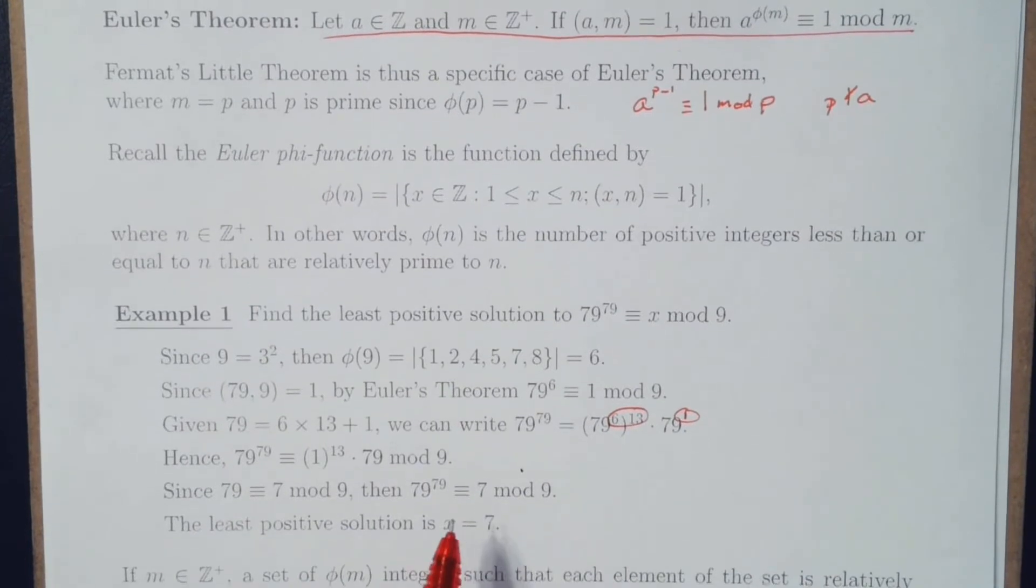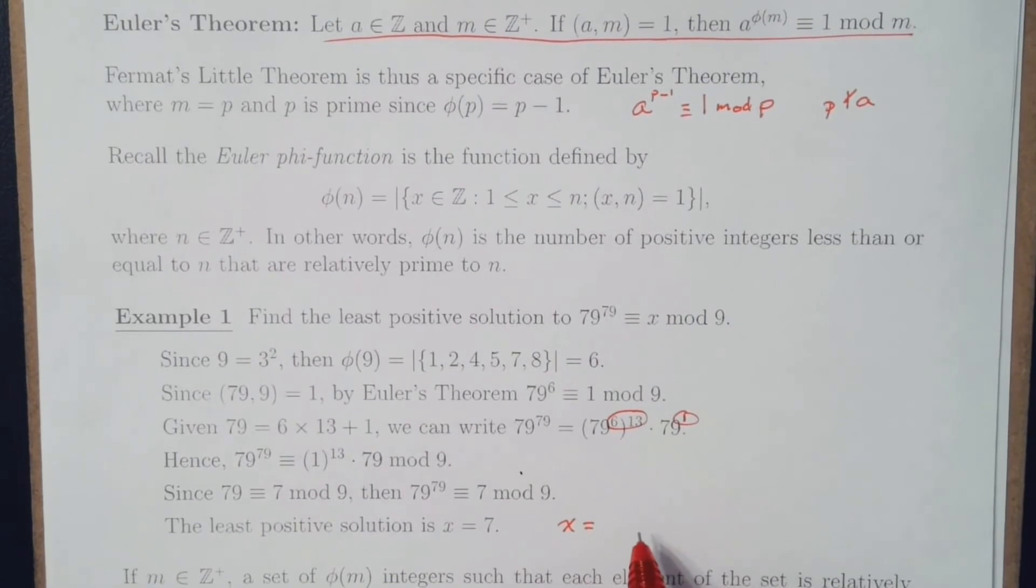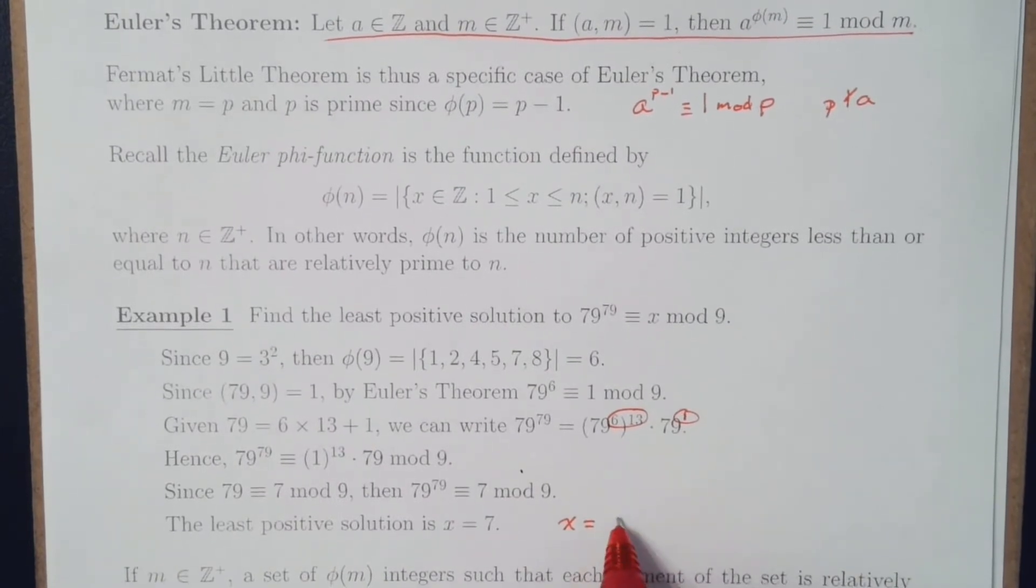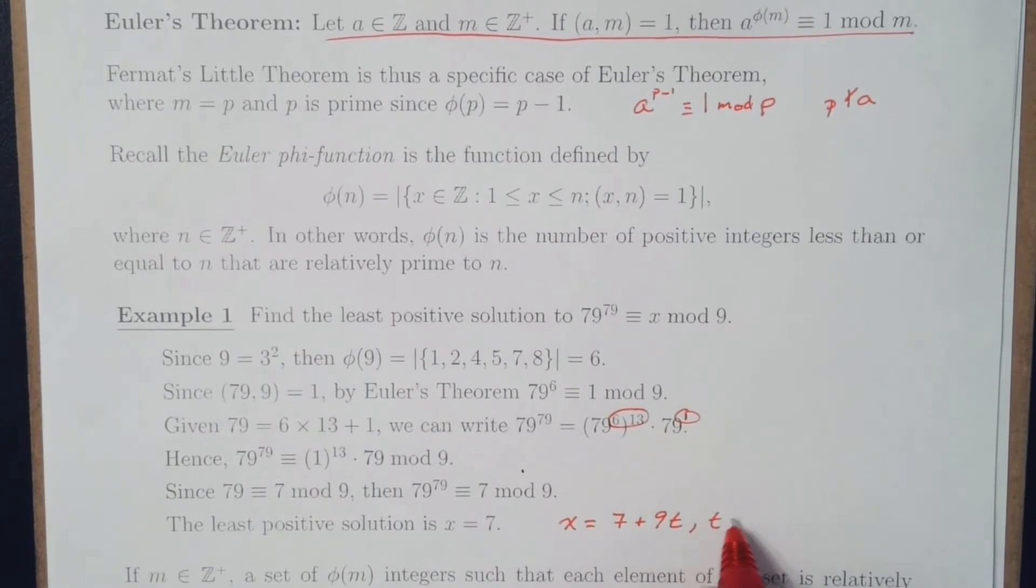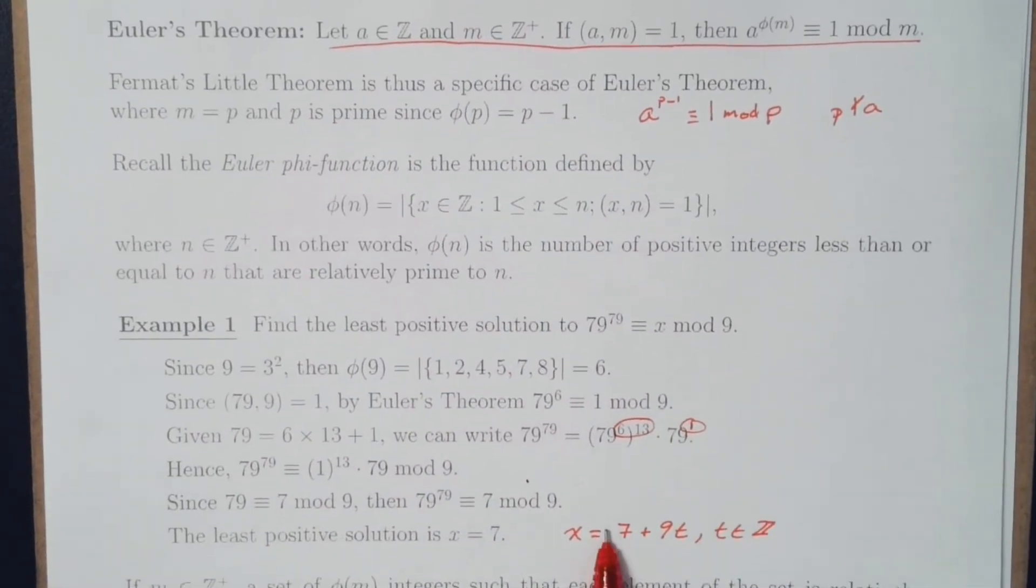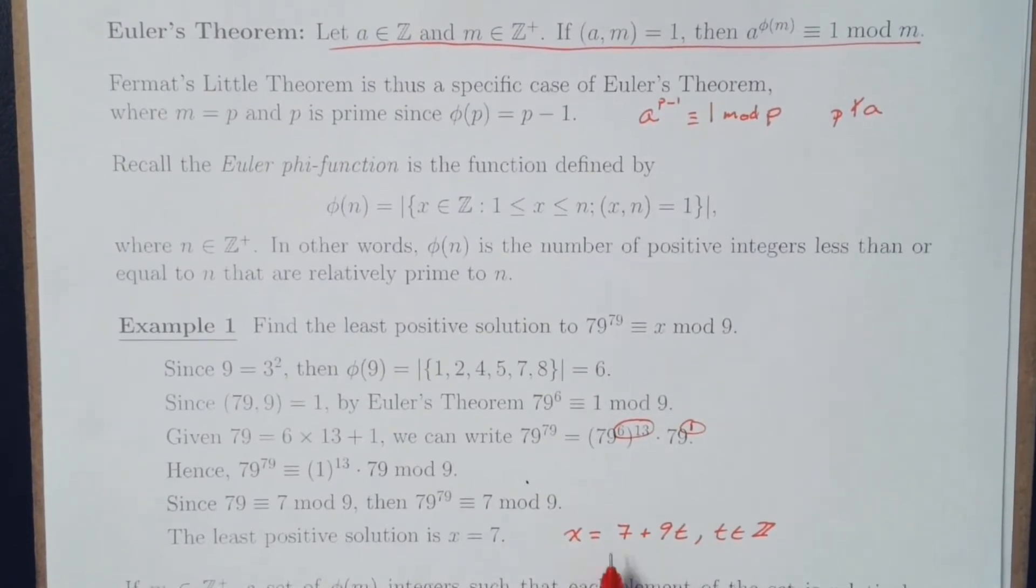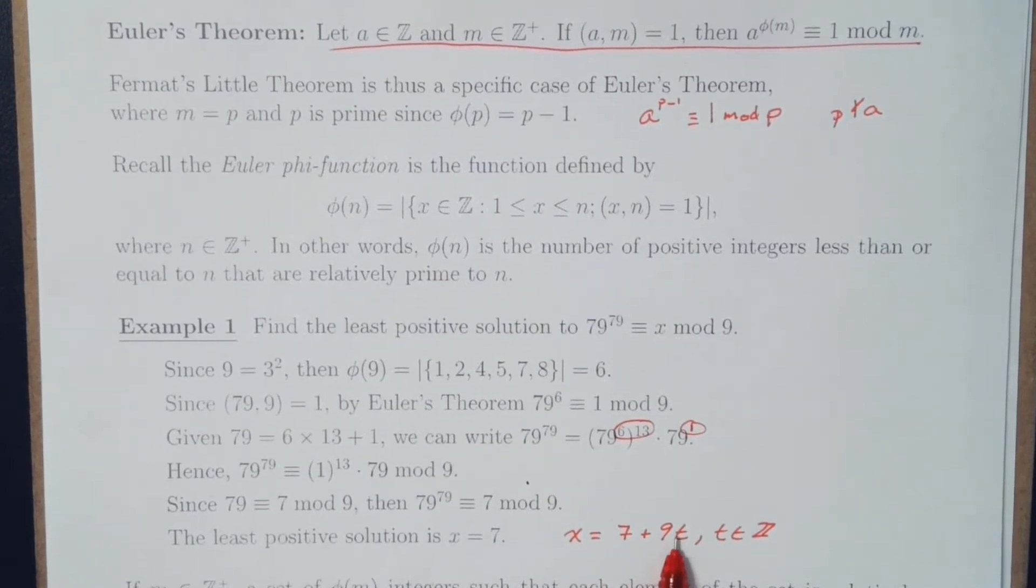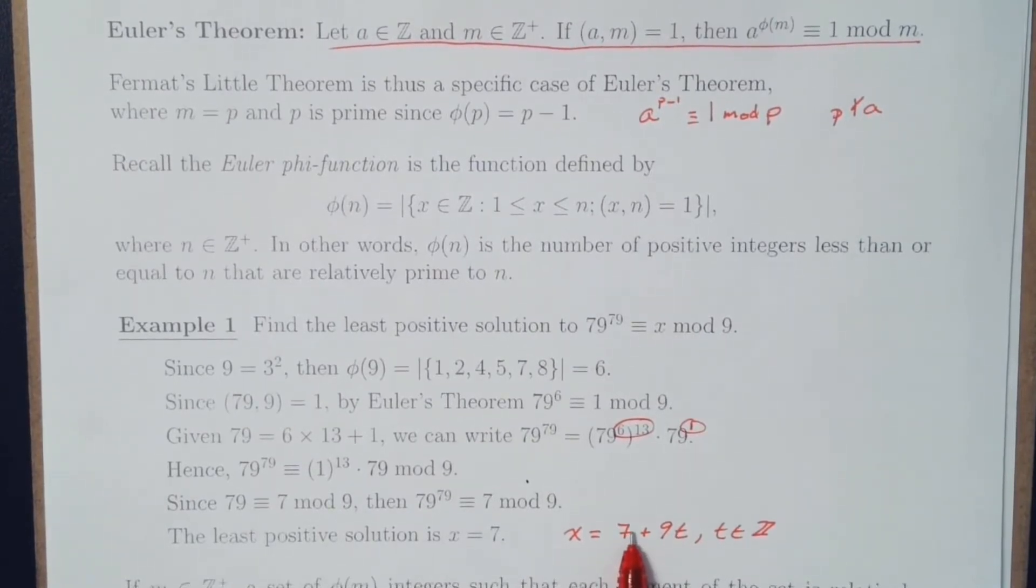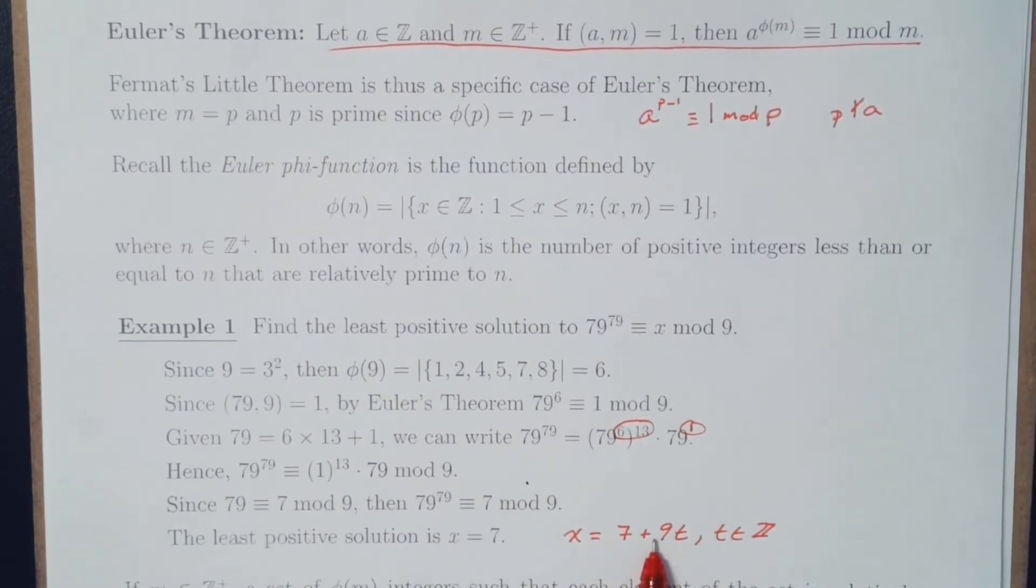Now, technically, if I wanted the general solution, x would be 7 plus 9t, where t would be some integer. So I could use 16, and that would work. I could use 25, and that would work. I could even use negative 2.